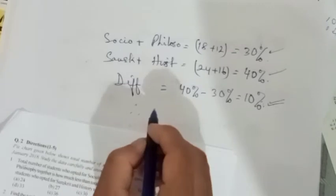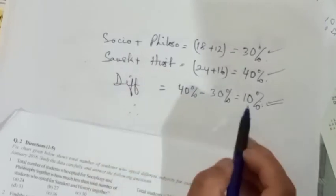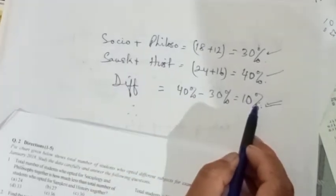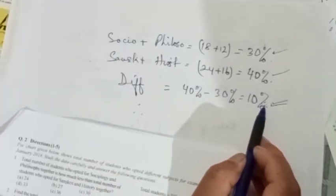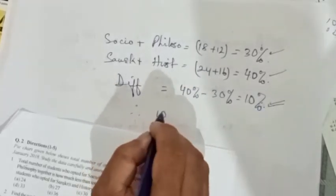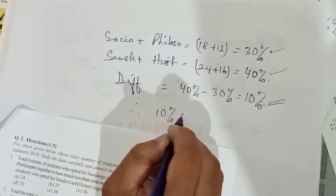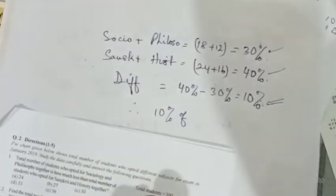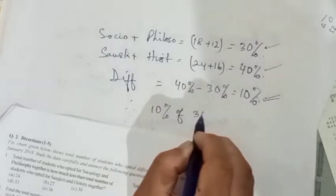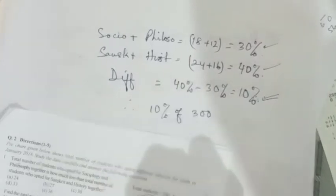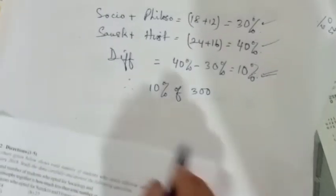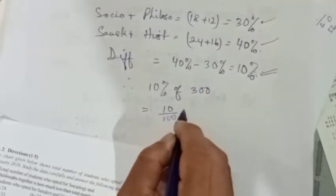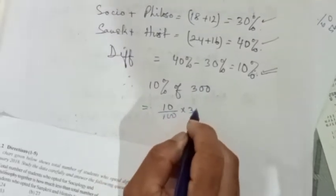Therefore the difference is 10%. That means 10% of 300. If you calculate 10 by 100 into 300, the answer is 30.